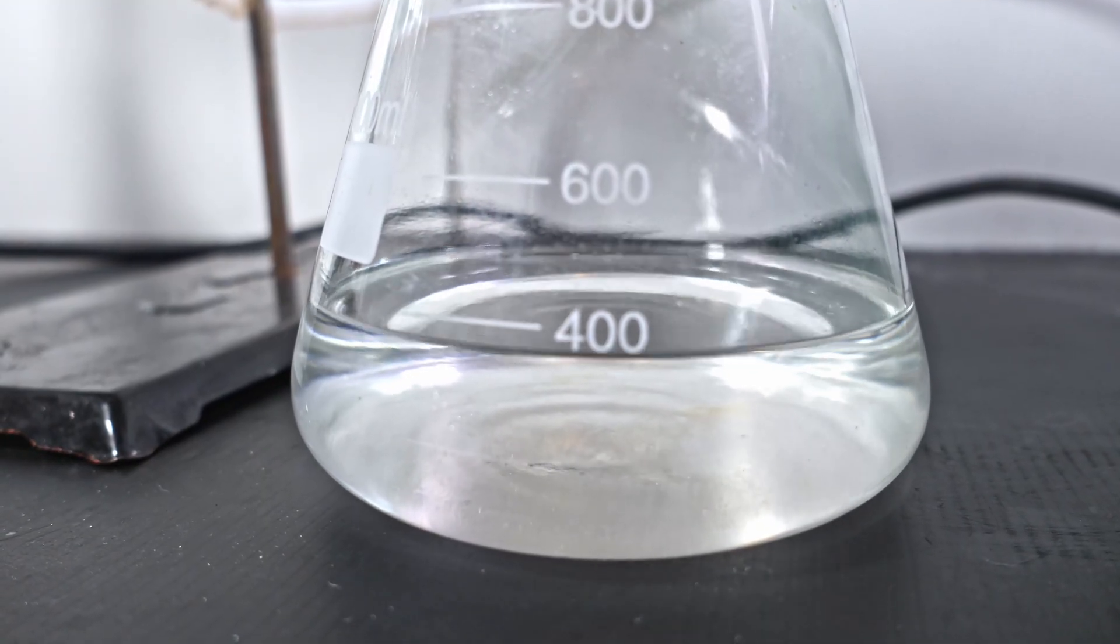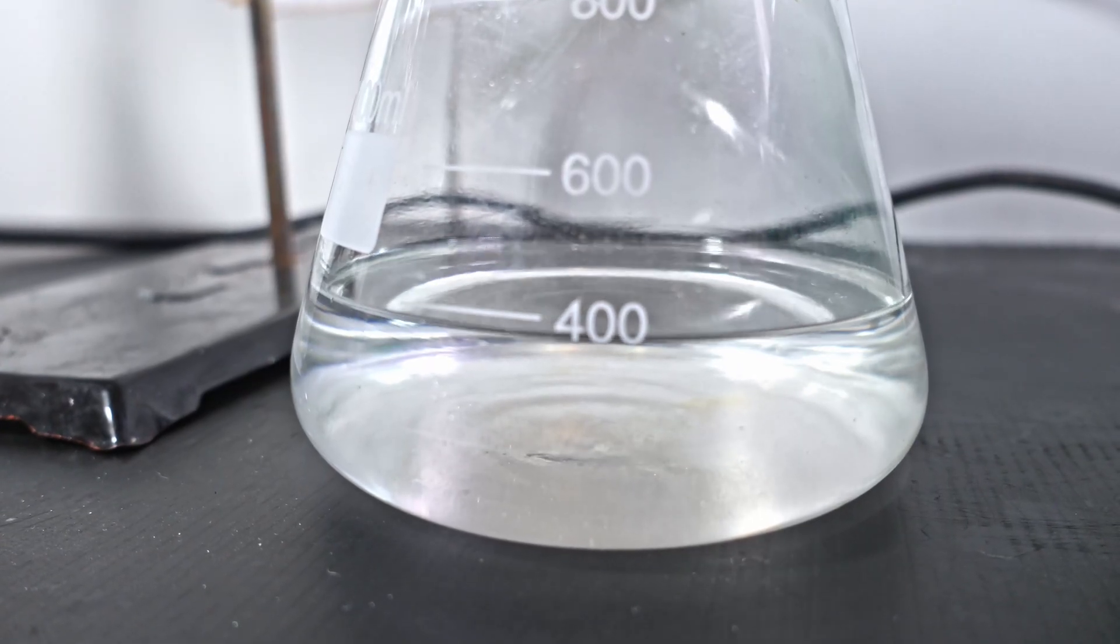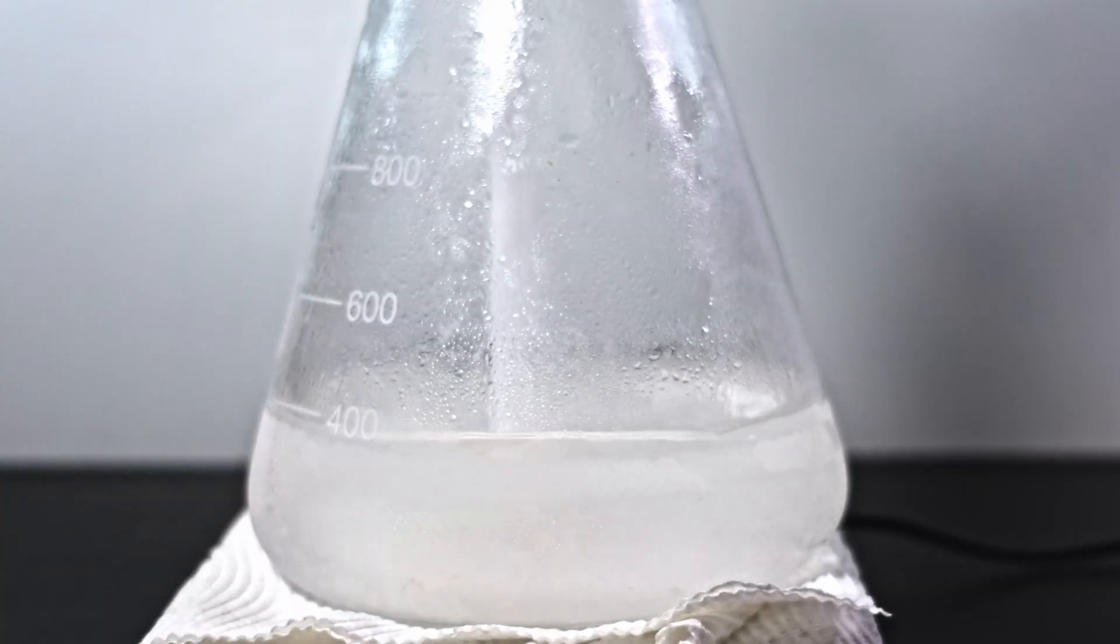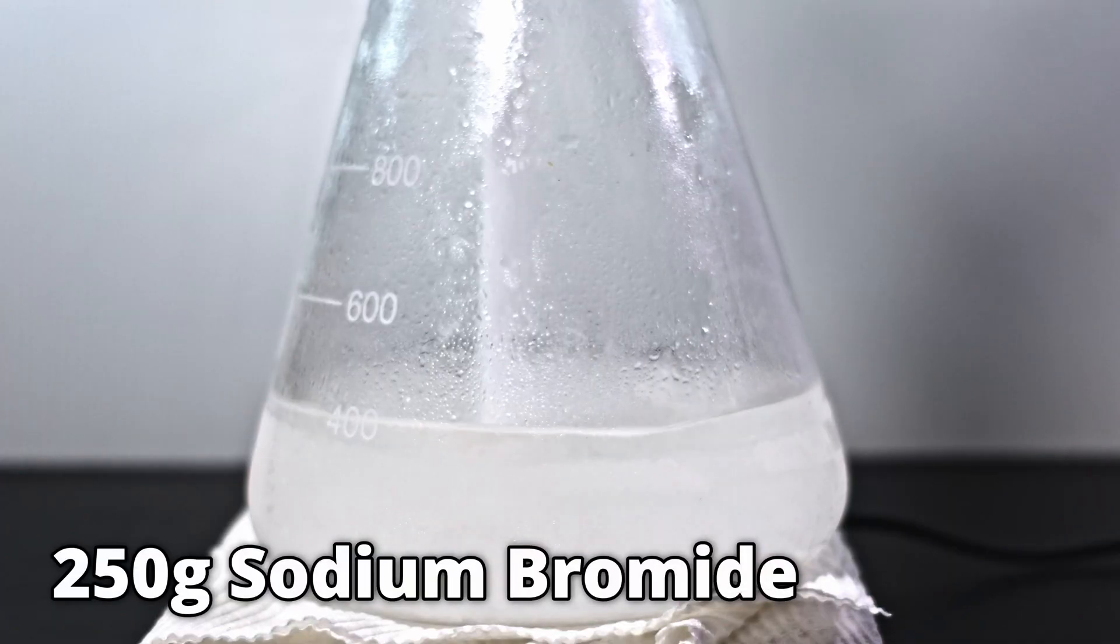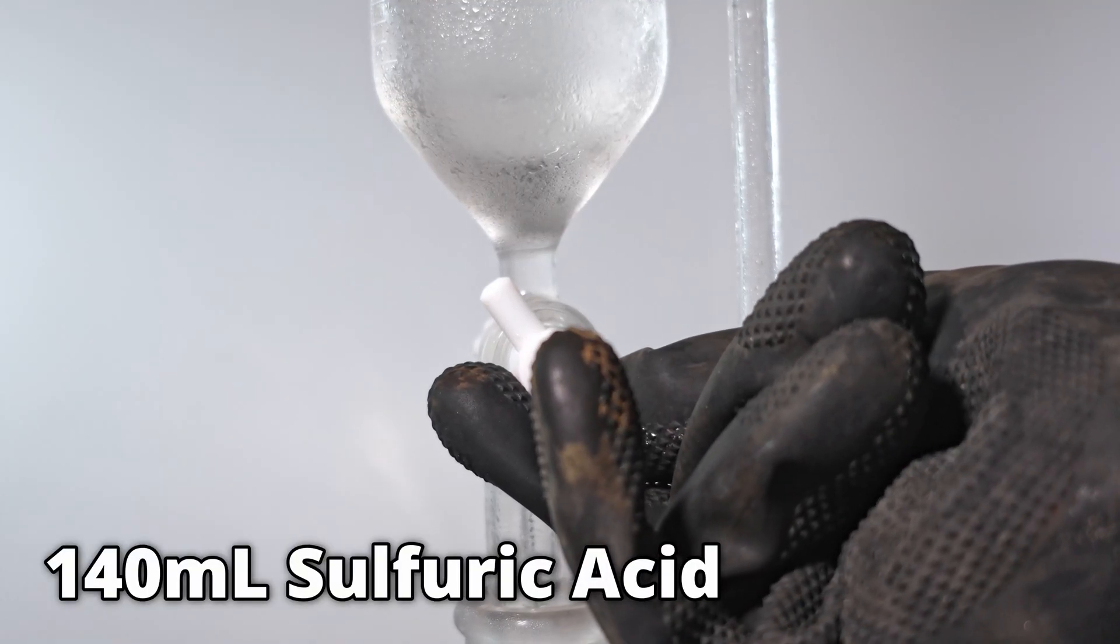If you recall, I started with 300 milliliters of ethanol so the growth in solution is a good sign we have some product. I do the same procedure, pouring in another 250 grams of sodium bromide and slowly dripping in 140 milliliters of sulfuric acid.